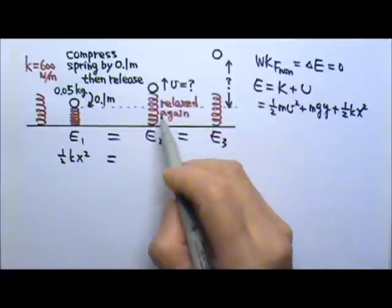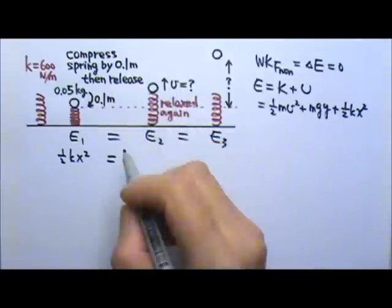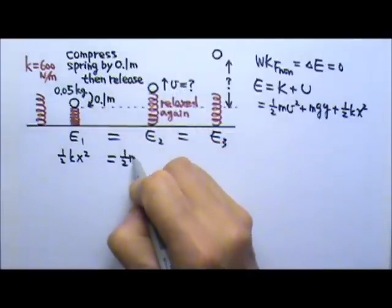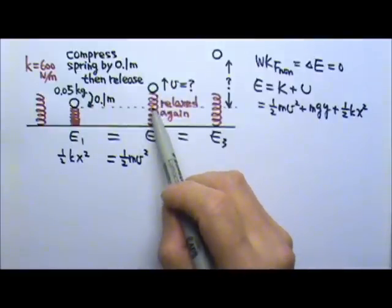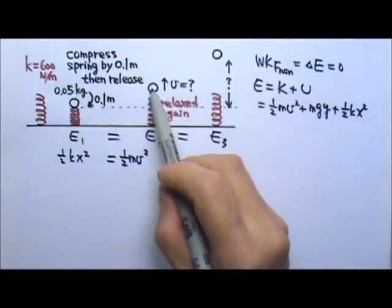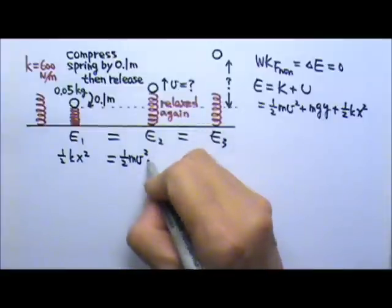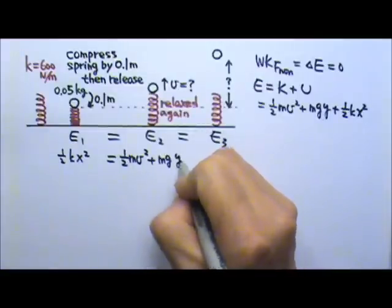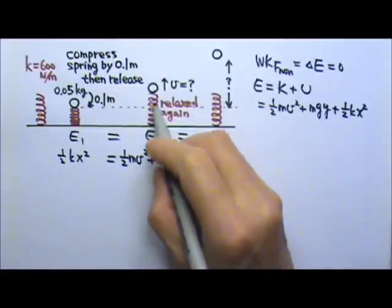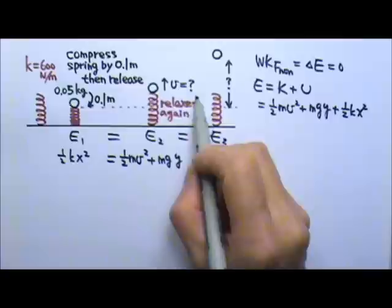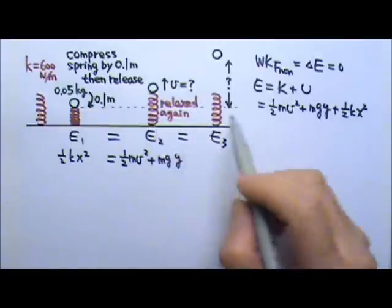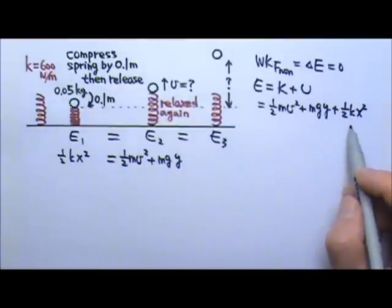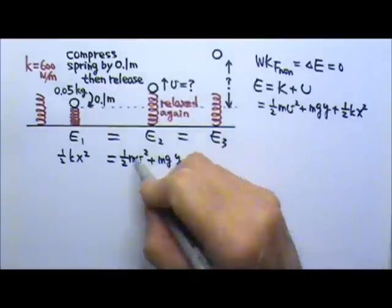At this stage, the ball is moving. We don't know how fast, but we're looking for that speed, so we have 1/2 mv squared. The ball is no longer on the ground, it is now above ground, so there is mgy. The spring is still there, but now the spring is relaxed. The spring is neither stretched nor compressed, so there is no energy stored in the spring.